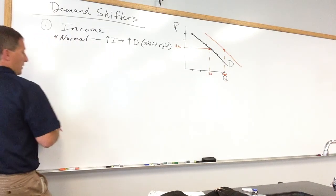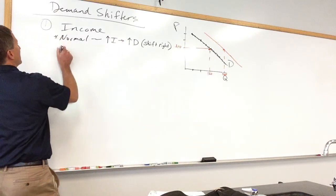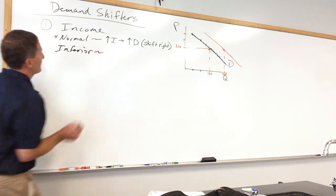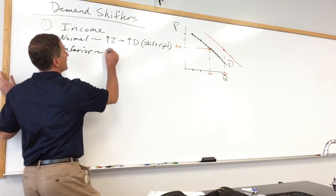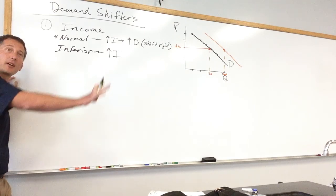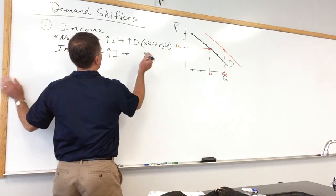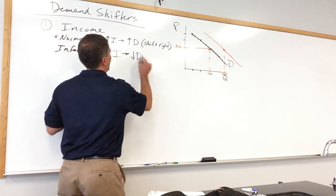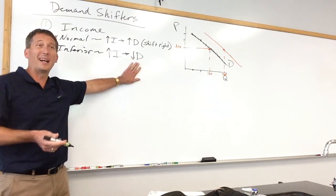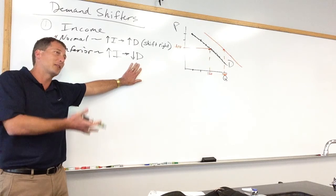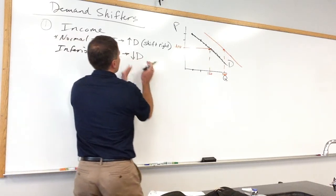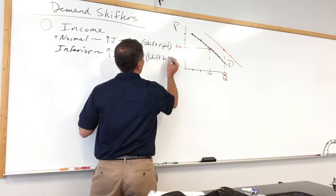Inferior goods — we've got hot dogs, ramen noodles, Keystone Light Beer, Milwaukee's Best, Vienna sausages, Spam. As income goes up, as we get a little richer, we shift our consumption toward perceived higher quality goods. Instead of eating ramen noodles five days a week like a poor college student, you might cut back to one day a week. So on average, income goes up, you tend to consume less ramen noodles — which would be a shift to the left of the demand curve.